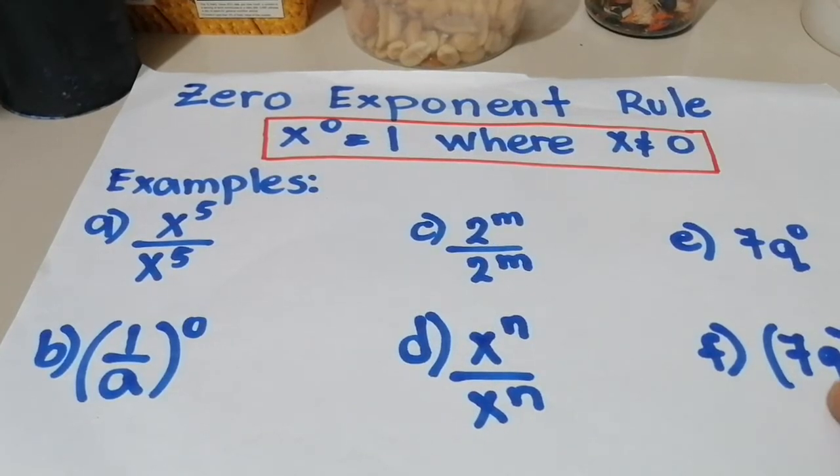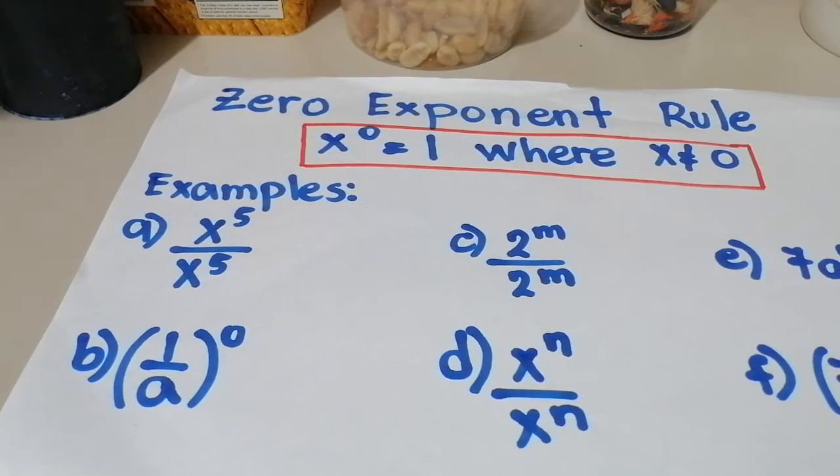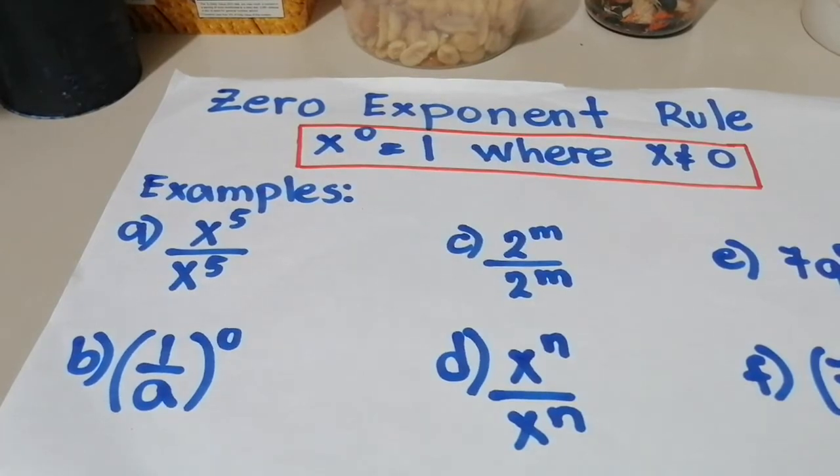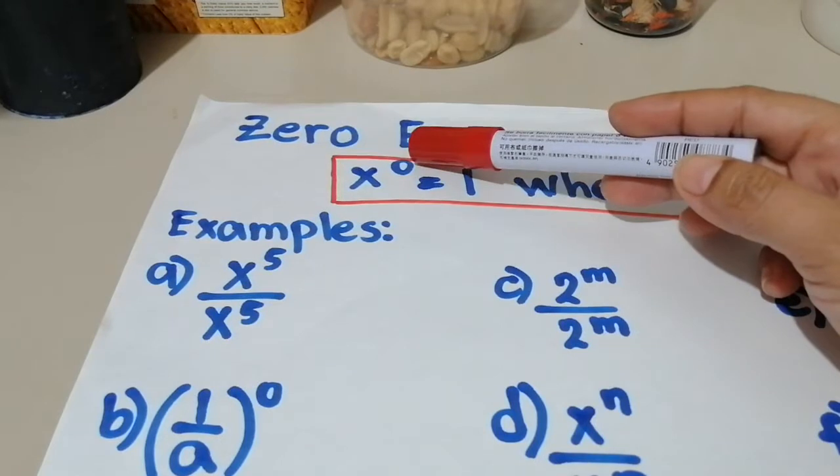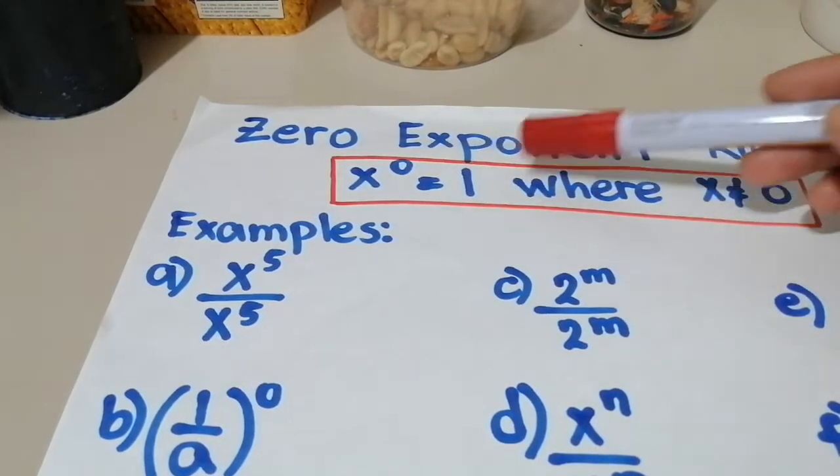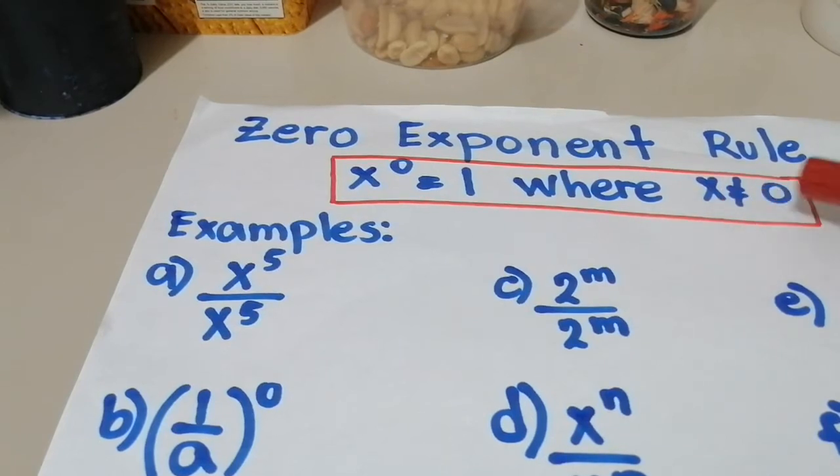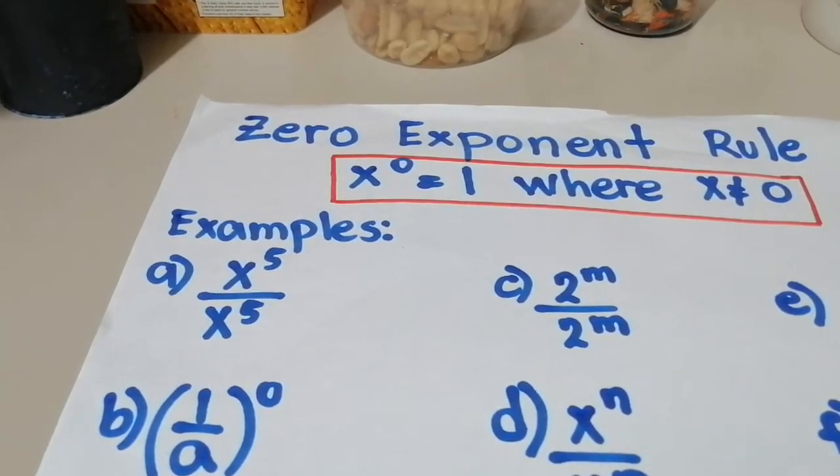The zero exponent rule states that any number excluding zero raised to the zero power is always equal to one. So what does it mean? Any number wherein it has a zero exponent is always equal to one, where the x here is not equal to zero. That's why it says excluding zero.